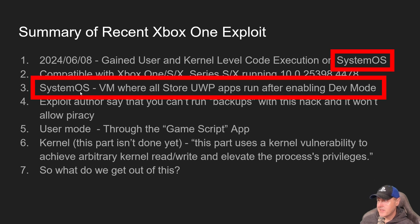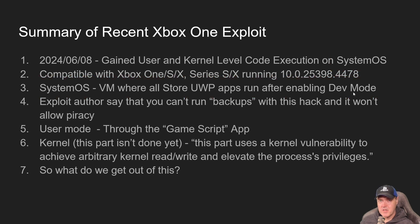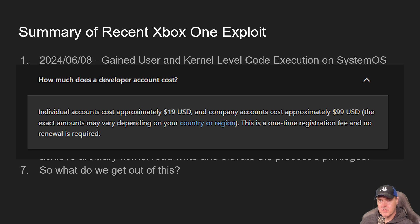System OS is kind of a VM where all of these store UWP apps run after enabling dev mode. It's obviously where you can pay Microsoft a fee and you are then a registered developer, which means that you could unlock developer mode on the Xbox, or test the apps that you were currently building.